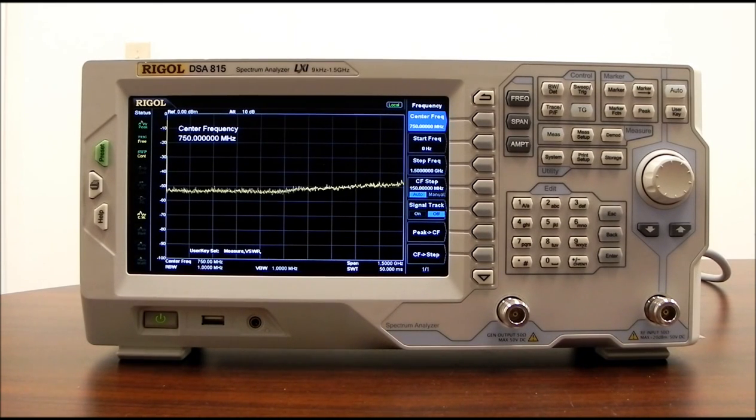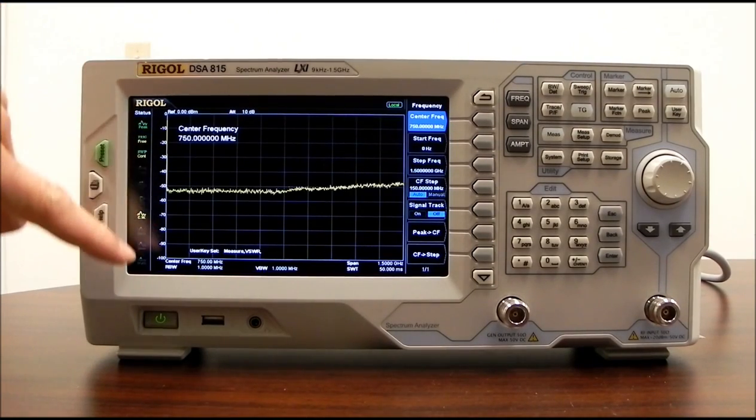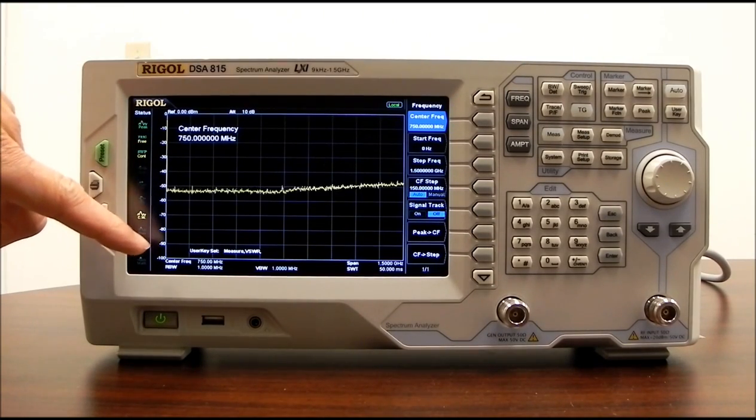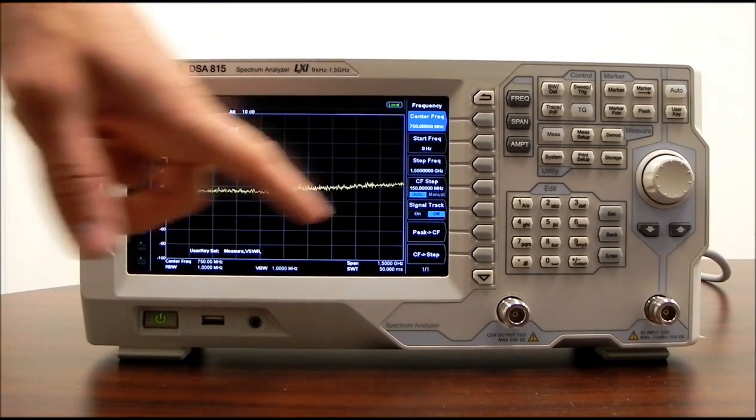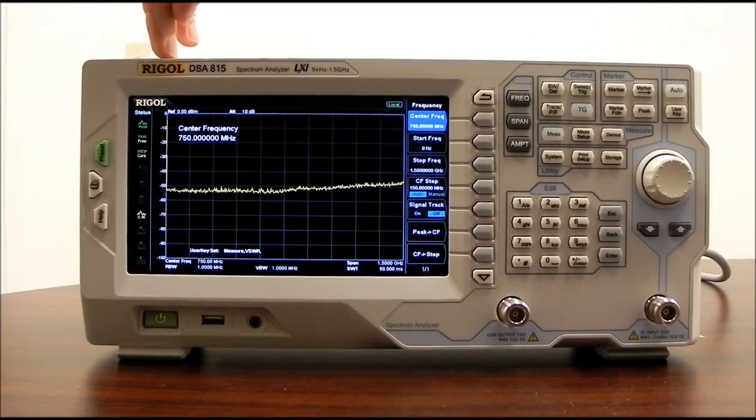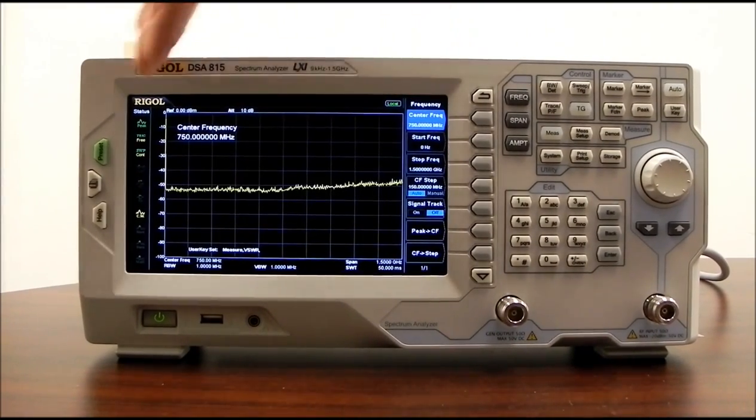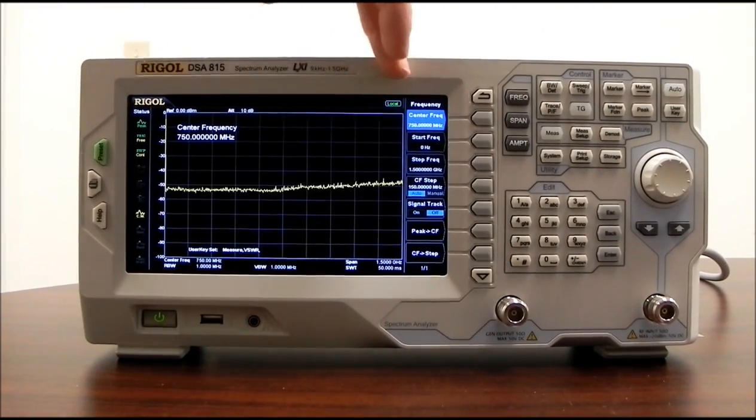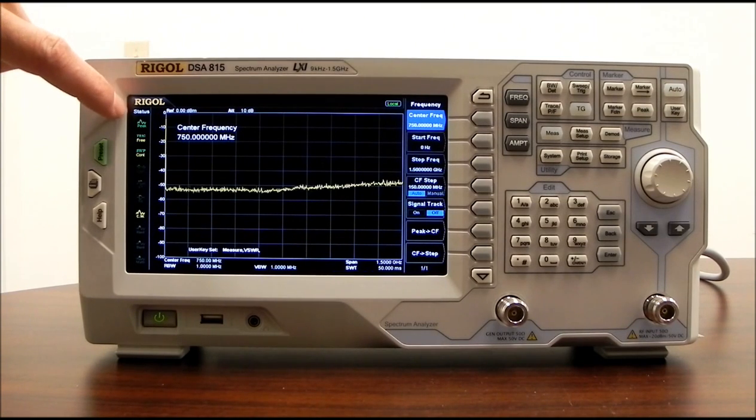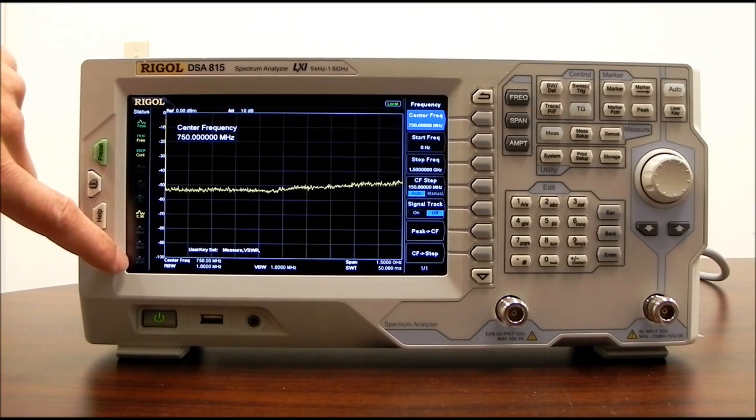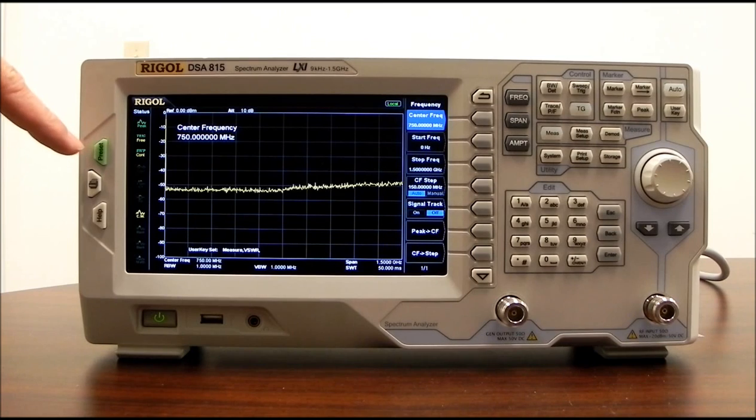So if we do a quick run through of the buttons and the display that we have here, on the left-hand side, we're indicating our amplitude. And then on the bottom, we actually have frequency. So we're going from a start frequency to a stop frequency, and it's scanning across that periodically. On the left-hand side, we also have status of various settings that we have the capability of changing.